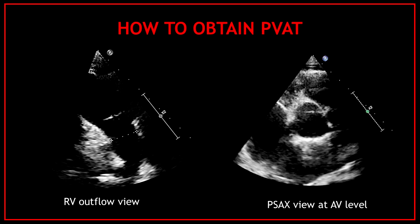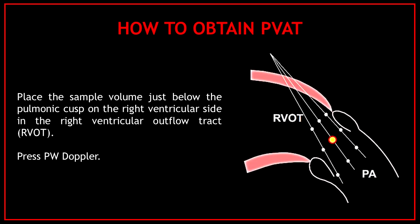To obtain the pulmonary velocity acceleration time, first you need to find the appropriate view. We normally get this measurement from the right ventricular outflow view from the parasternal long axis or from the parasternal short axis view at the aortic valve level. Second, place the sample volume just below the pulmonary valve cusps on the right ventricular side in the right ventricular outflow tract, then press pulse wave Doppler. Basically, place the sample volume at the tip of the leaflets and press pulse wave Doppler.